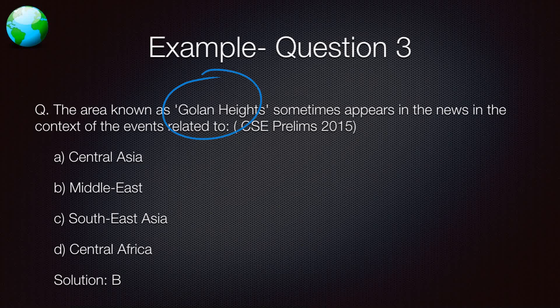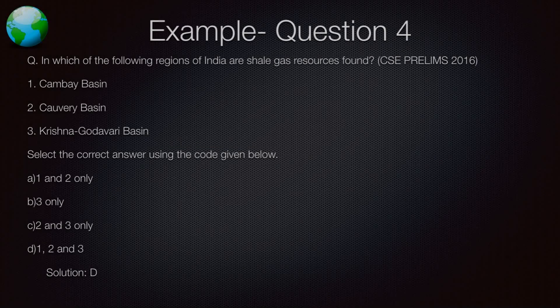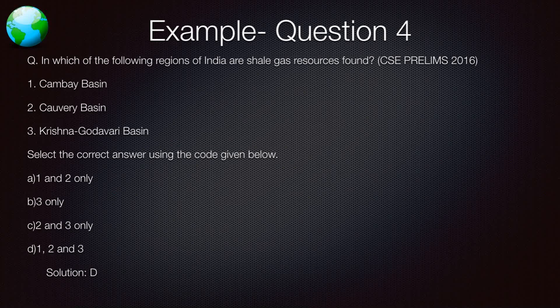The area known as Golan Heights sometimes appears in news — the answer is Middle East. This is straightforward: the Golan Heights were acquired by Israel and previously belonged to Syria, and there is a territorial dispute between these two countries. If you have read The Hindu properly, you will get it right. Similarly, a question about shale gas reserves in India — the Kaveri basin, Krishna-Godavari basin, and Cambay basin all appear in news frequently.